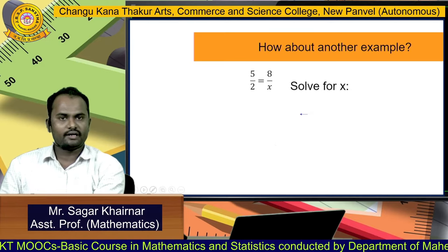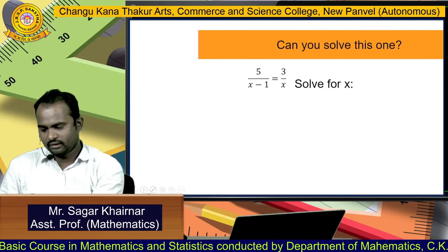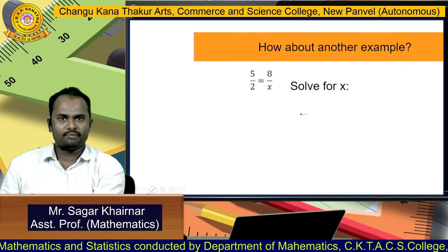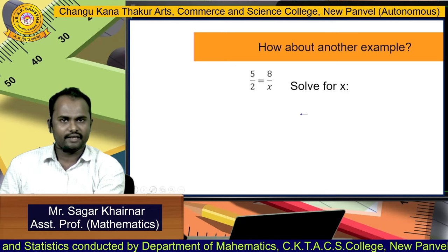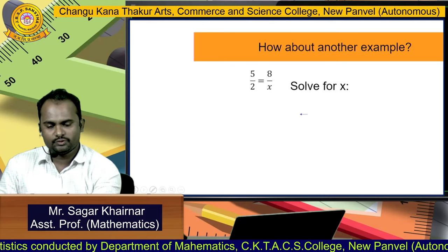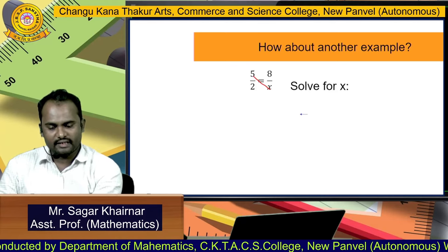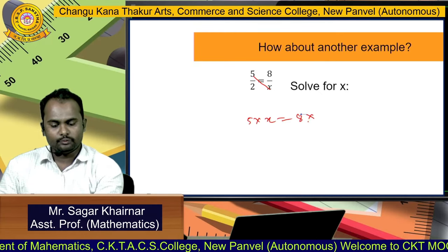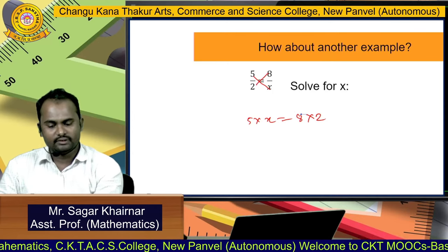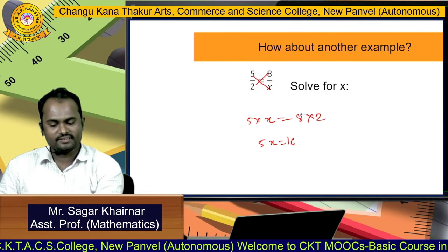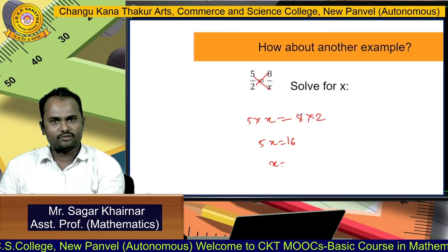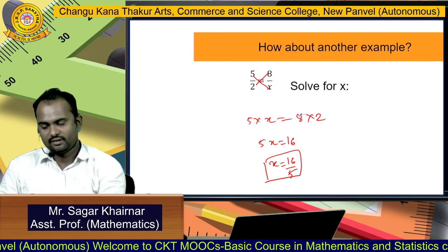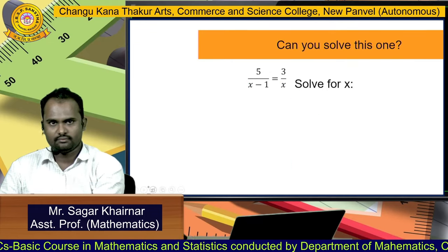Now let us solve another example. Suppose we have 5 by 2 equal to 8 by x. We can find the value of x using the cross product property. That means 5 into x is equal to 8 into 2, so we get 5x equal to 16, which means x equal to 16 divided by 5.